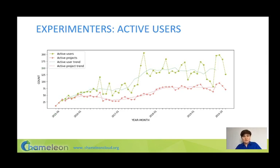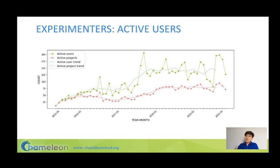Here is a graph of our active users — defined as users who have a running allocation on the system, meaning they had to actually run something to be counted. Active user and active project numbers are growing, and we also see a very consistent seasonal pattern: usage peaks as soon as the fall semester starts, drops off at the end of the year during the holiday period, picks up again with the winter or spring semester, intensifies in spring with conference deadlines, and drops off again during the summer. Trend lines show testbed usage has been growing overall.